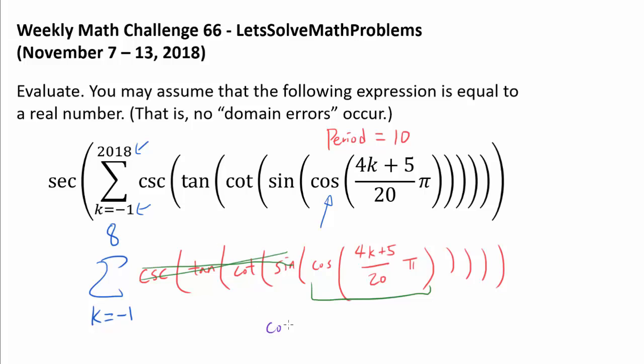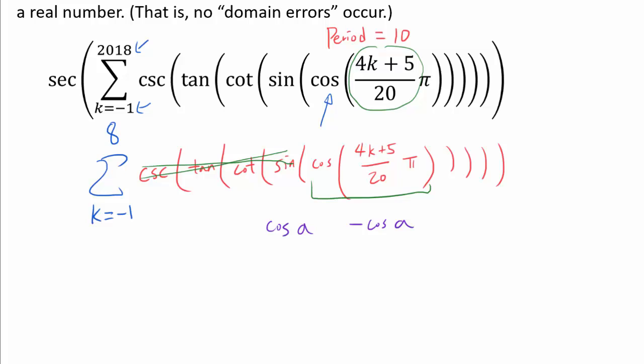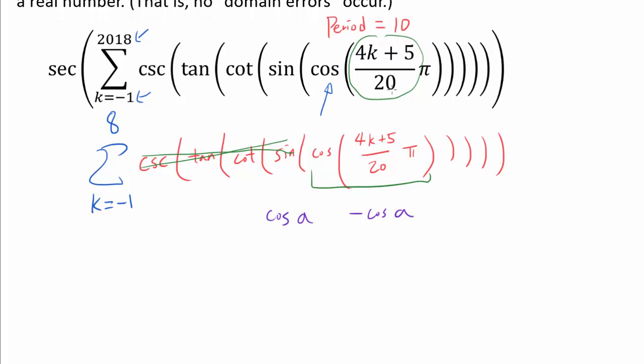Well, one way of getting cancellation is if we have cosine of something and negative cosine of the same thing for two different values of k. Does that ever happen? Let's look closely at 4k+5/20, and you may shout out with joy - yes, because when k is replaced with k+5, we are going to be adding π to the original expression. Let's write this out.